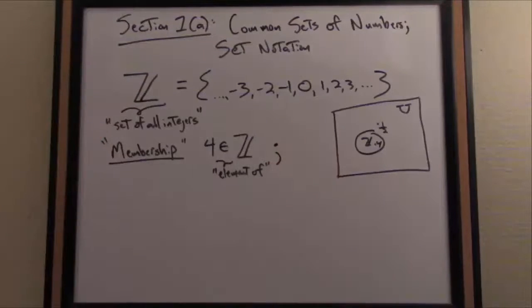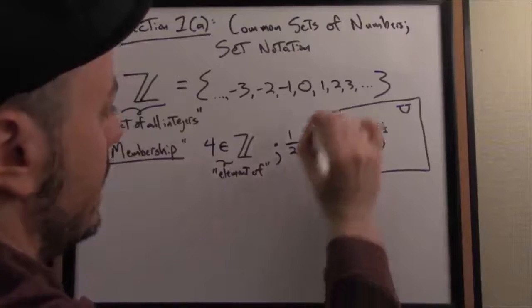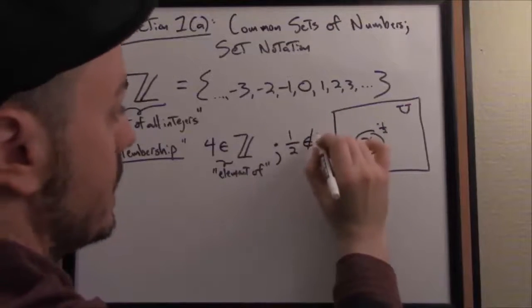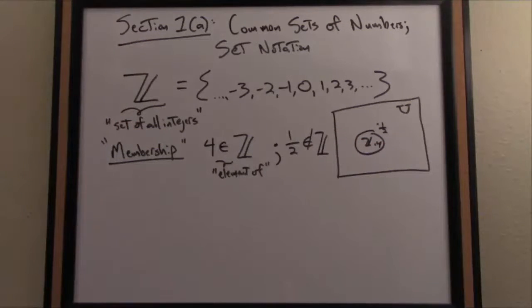How can I show something's not an element of it using this membership notation? Well, for instance, we just observed one half is not an element of. I'm going to write epsilon with a slash through it. One half is not an element of or a member of the integers.